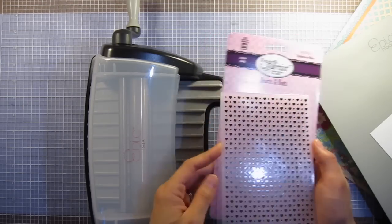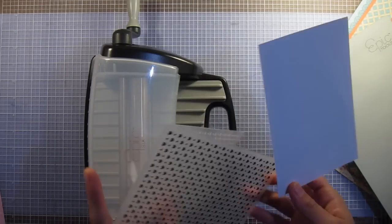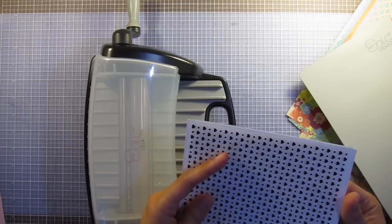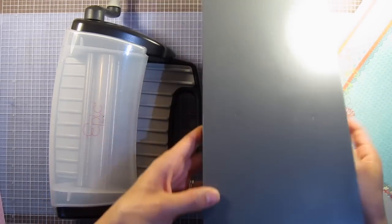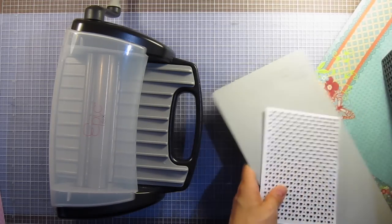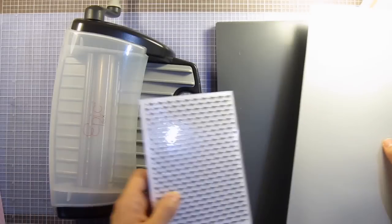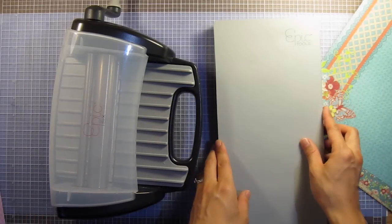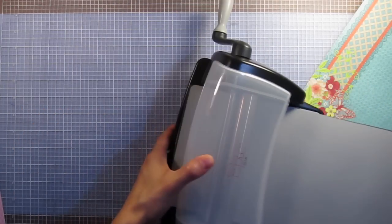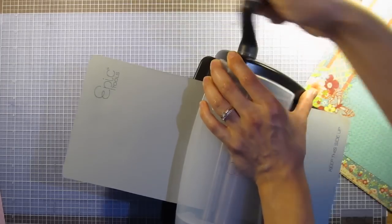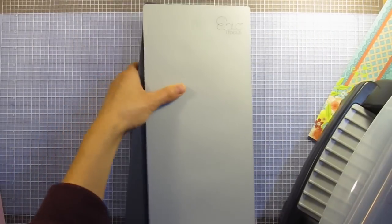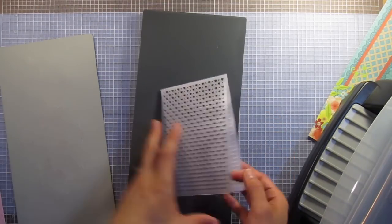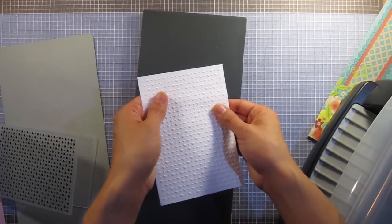First I'm using my Hearts and Dots embossing folder. I've cut a piece of white cardstock and I'm putting it inside the embossing folder. I've got my die cutting and embossing machine right here with the embossing platform, which is this dark grey one if you have the Epic 6. If you have another machine, you'll just follow that machine's instructions. I'm putting the embossing folder on the platform and the cutting mat on top, and running it through the machine. There we have a really pretty textured hearts and dots piece of paper.